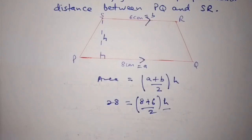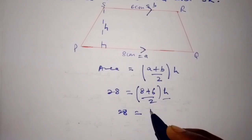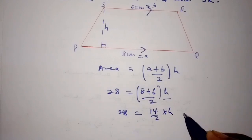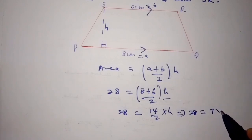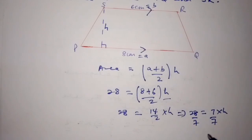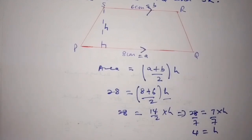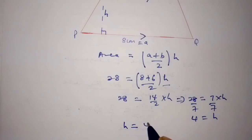So we can say that 28 = (8 + 6) / 2 × H. That gives us 28 = 14 / 2 × H, which is 28 = 7 × H. Dividing both sides by 7, we get 28 / 7 = 4. So H = 4.